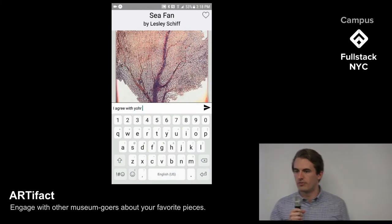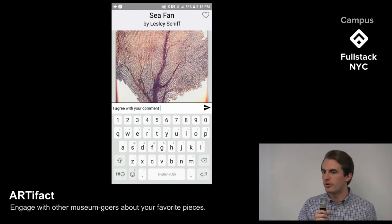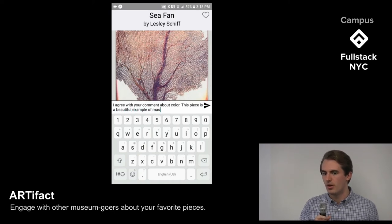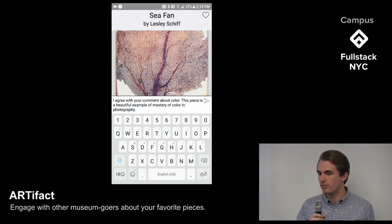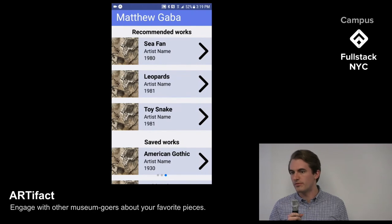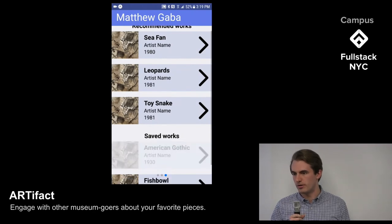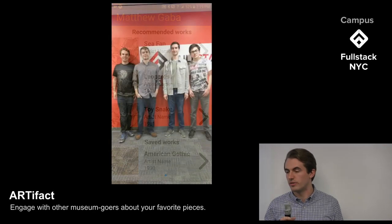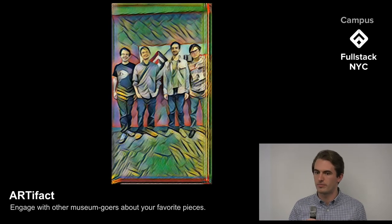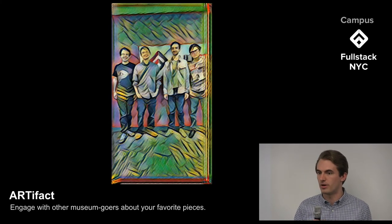One challenging aspect of our forum was rendering nested posts with parent-child relationships. We took advantage of React's recursive abilities, having a component that renders all top-level posts while calling itself repeatedly to render the next layers. In the forum, users can favorite works of art and view all their favorited works in the user page. There, they can also view recommended works generated by our graph-based recommendation engine.